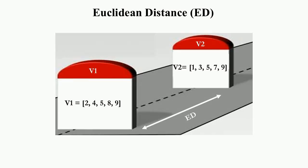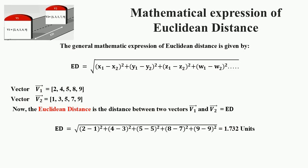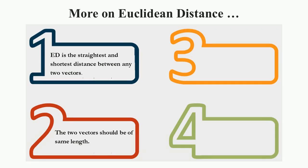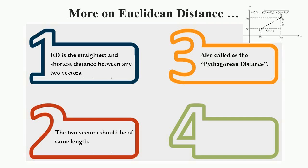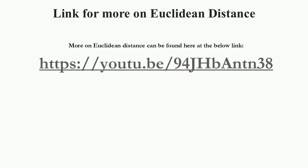Let us understand the Euclidean distance. Euclidean distance is the distance between two vectors of the same length. It is the straightest and shortest distance between two vectors of the same length — it is important that the two vectors should be of same length. Euclidean distance is also called Pythagorean distance, as the Pythagorean theorem is the basis for its computation. Euclidean distance is always a positive and scalar quantity.